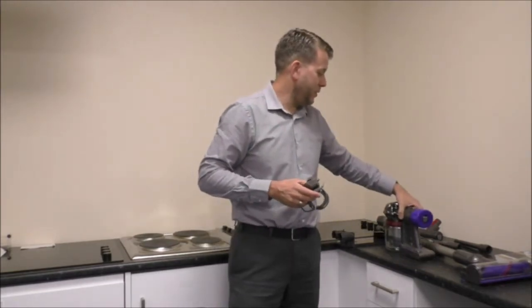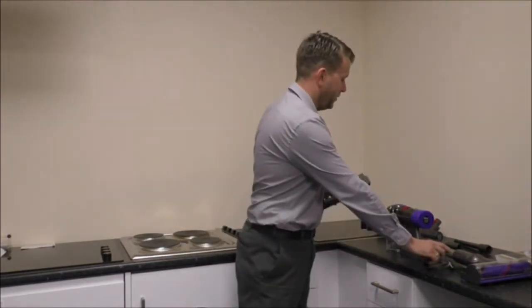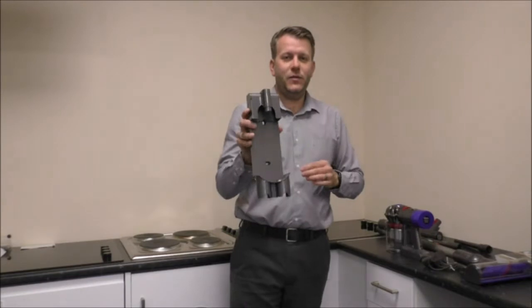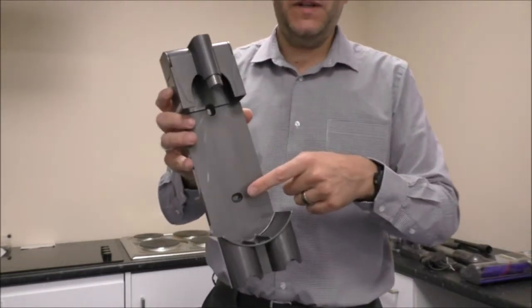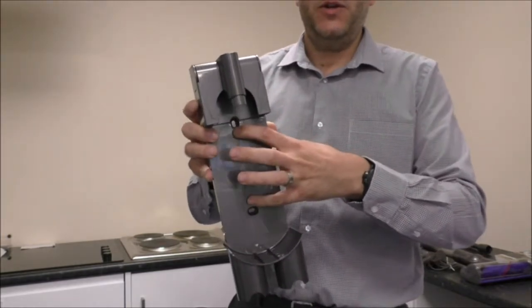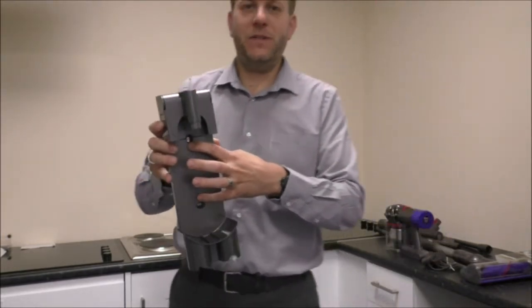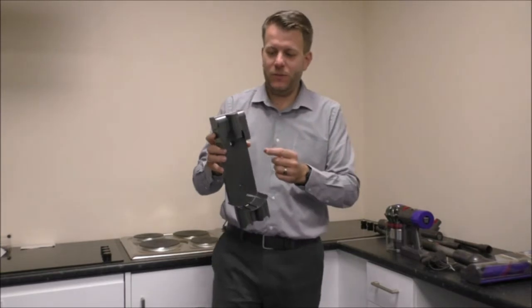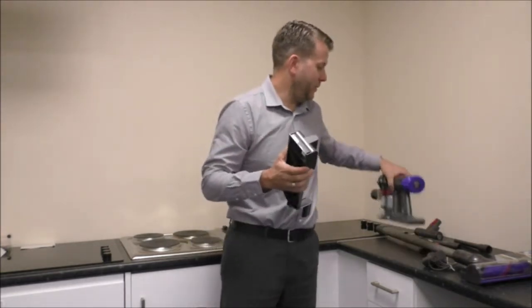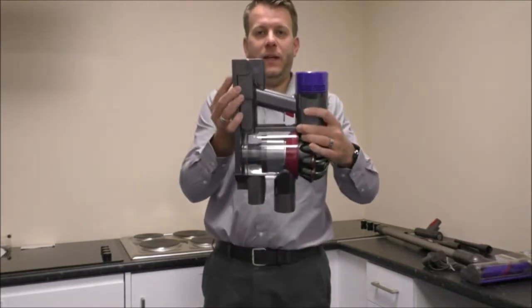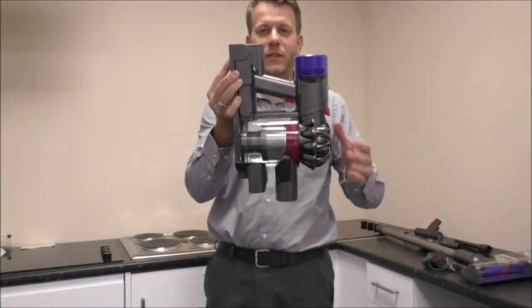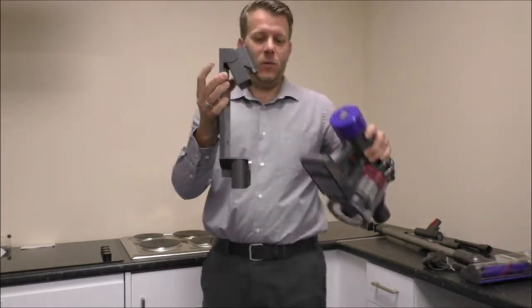The other thing that it does come with is a wall mount. This is the wall mount itself, it's very easy to put on the wall. You've just got the two screws here so that just screws into the wall, just make sure it is a good quality wall you're putting it into. And what you'll find is to put it in there it just drops in like that so it is perfectly secure when it's on the wall.